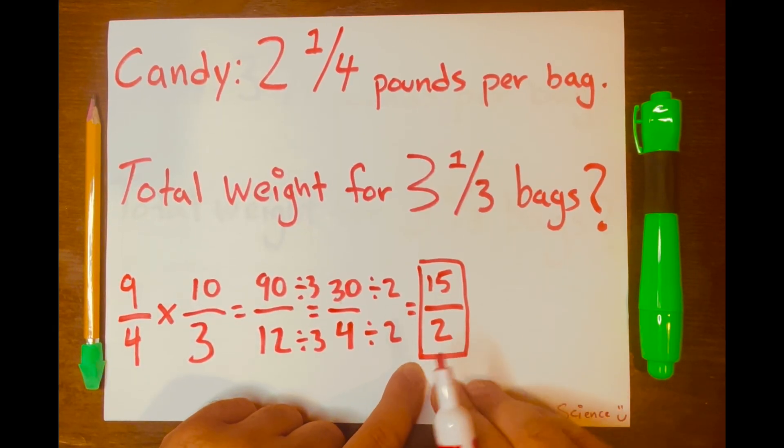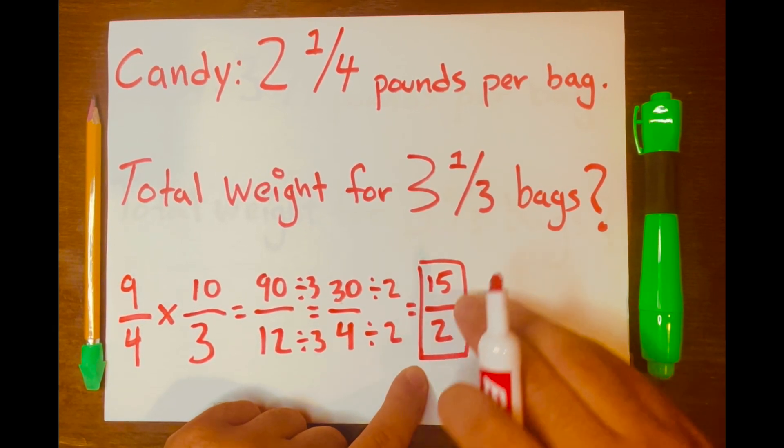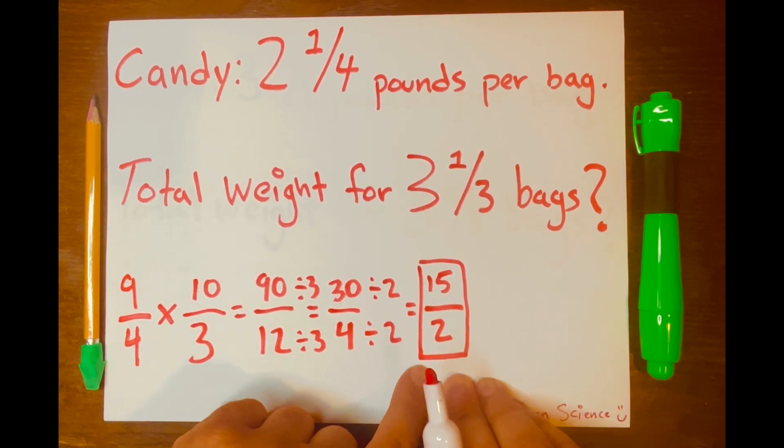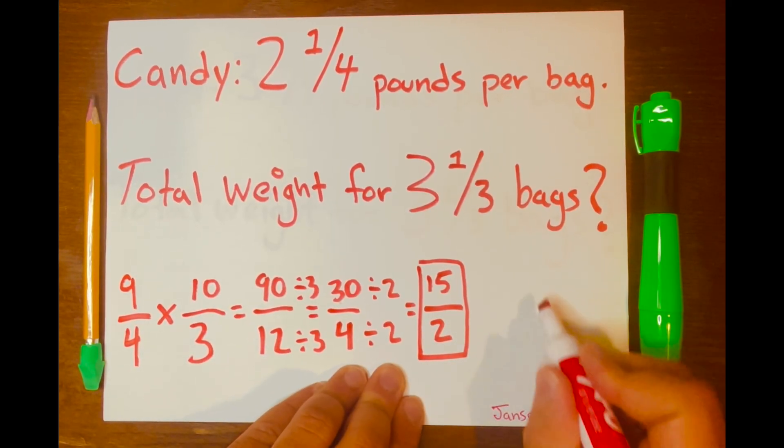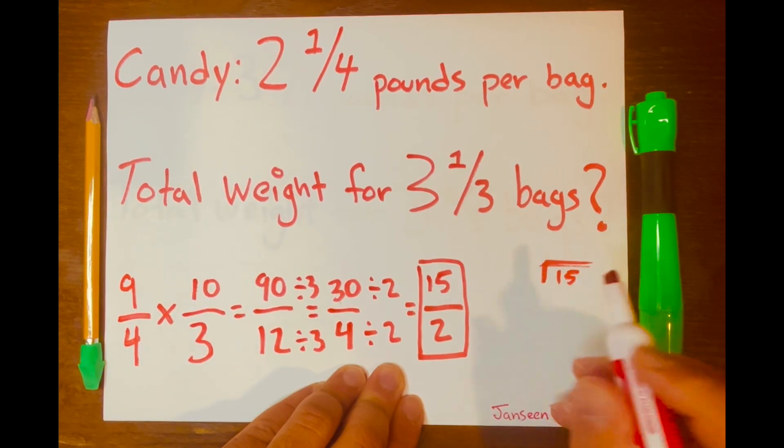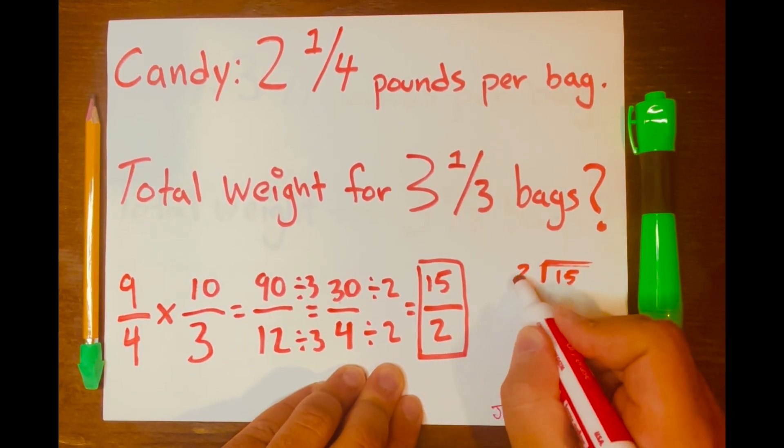Now, we can't simplify this further. So that's it. This is your answer. And if you want to turn this into a mixed number, all we have to do is use long division. So 15 will be your dividend and two will be your divisor.